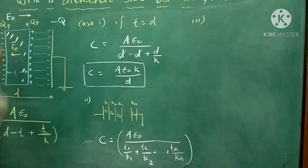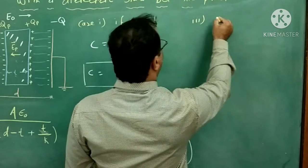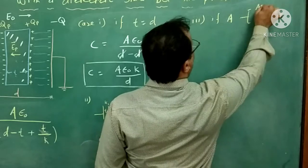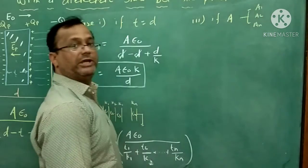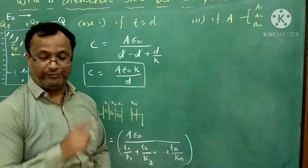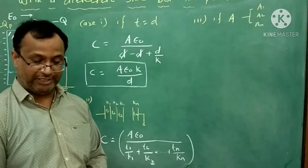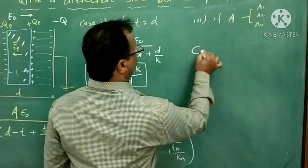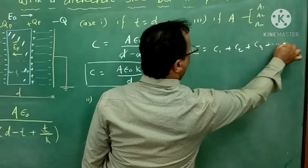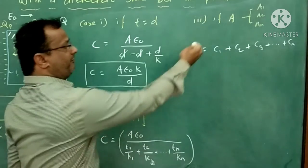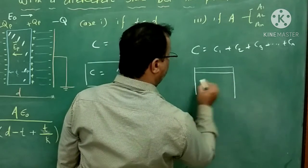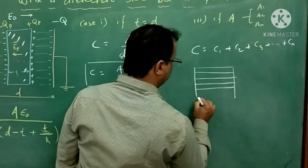For the parallel combination, the total area A is divided into A1, A2, ... An, where the sum of all these areas equals A. Suppose this is the first plate and this is the second plate, with dielectric slabs: the first, second, third, fourth, and nth slab. The area of each is A1, A2, A3, ... An. This is the positive plate with positive potential and earthing on the other side — such a combination is the parallel combination.